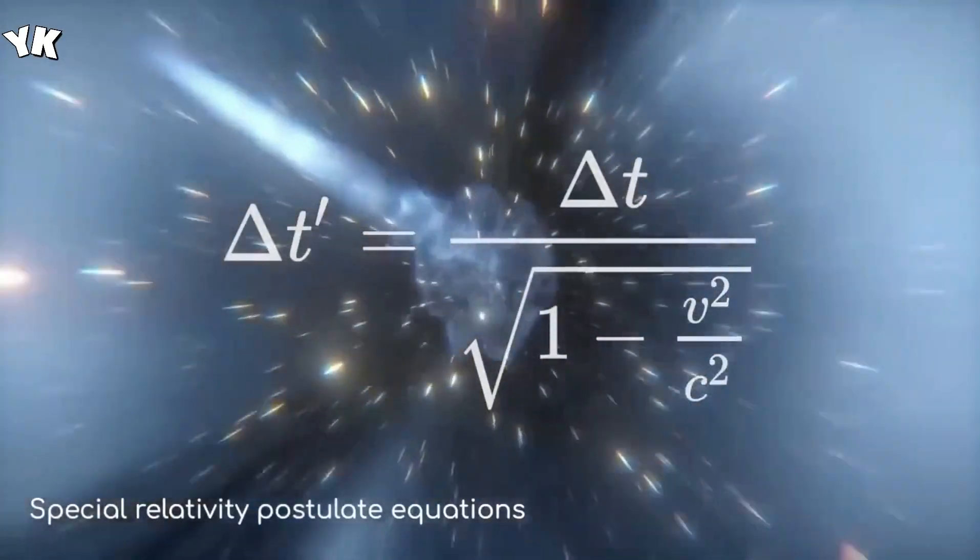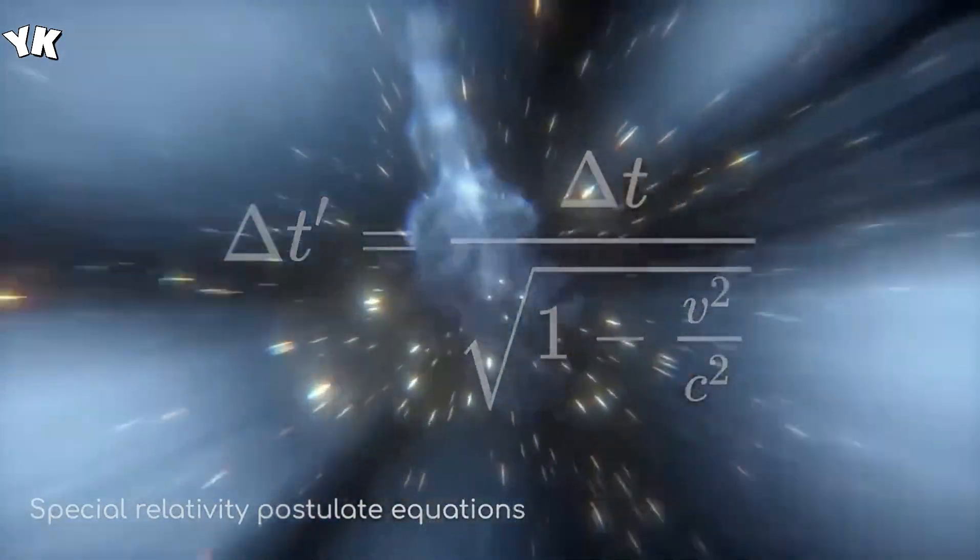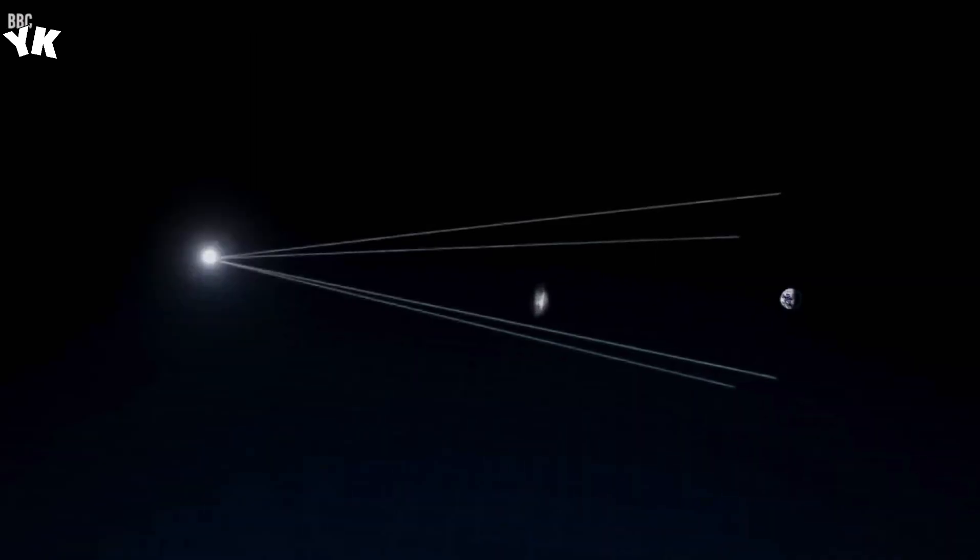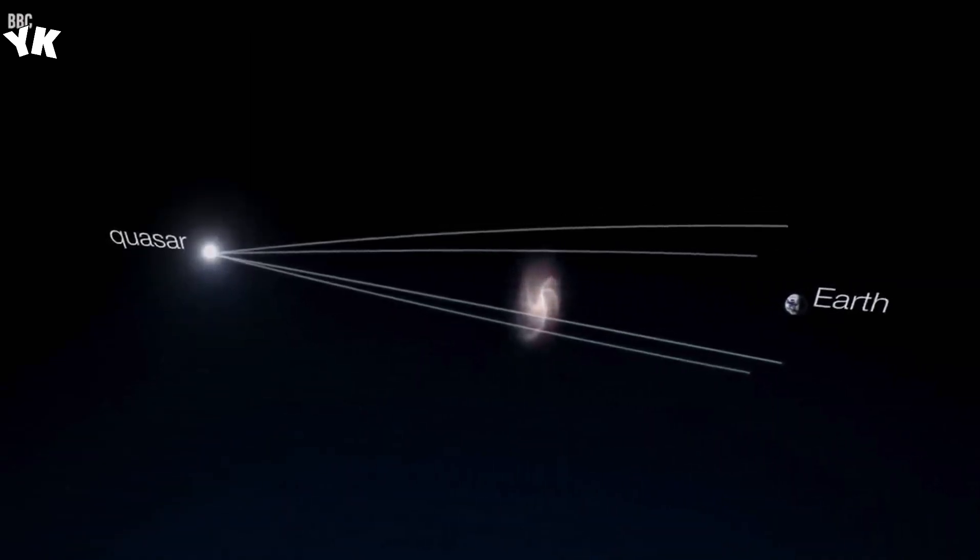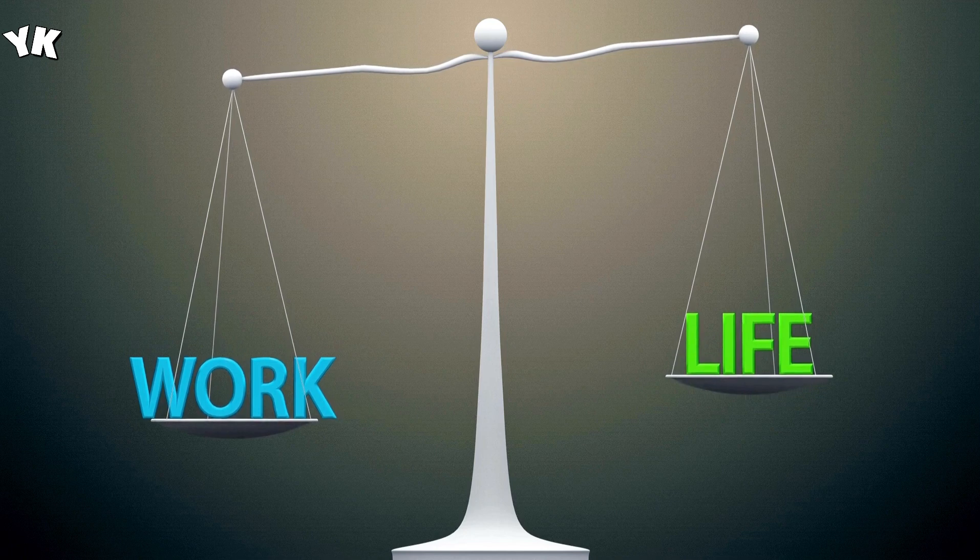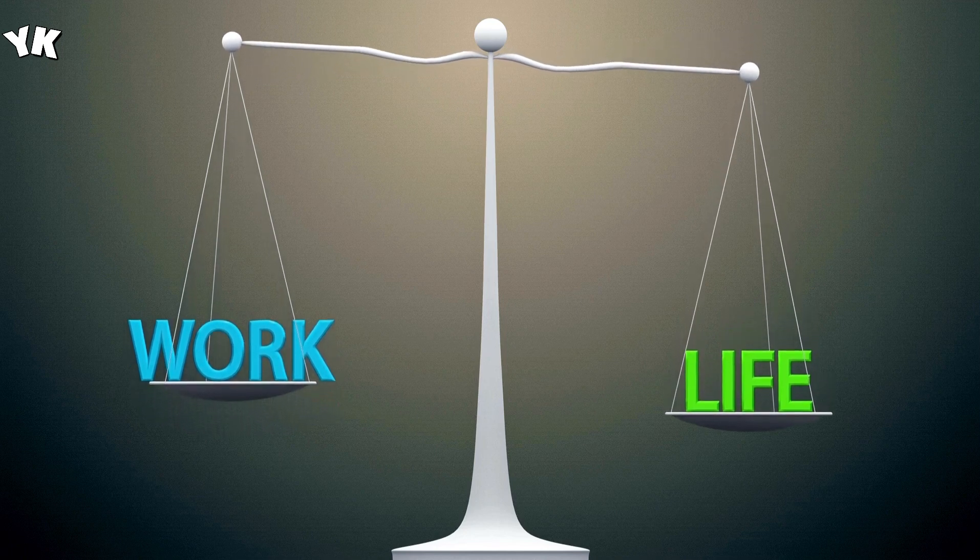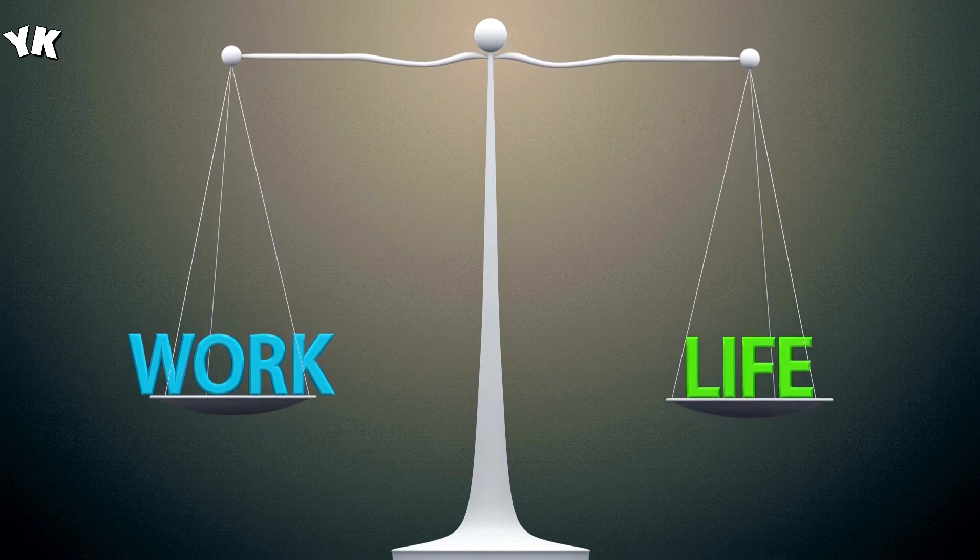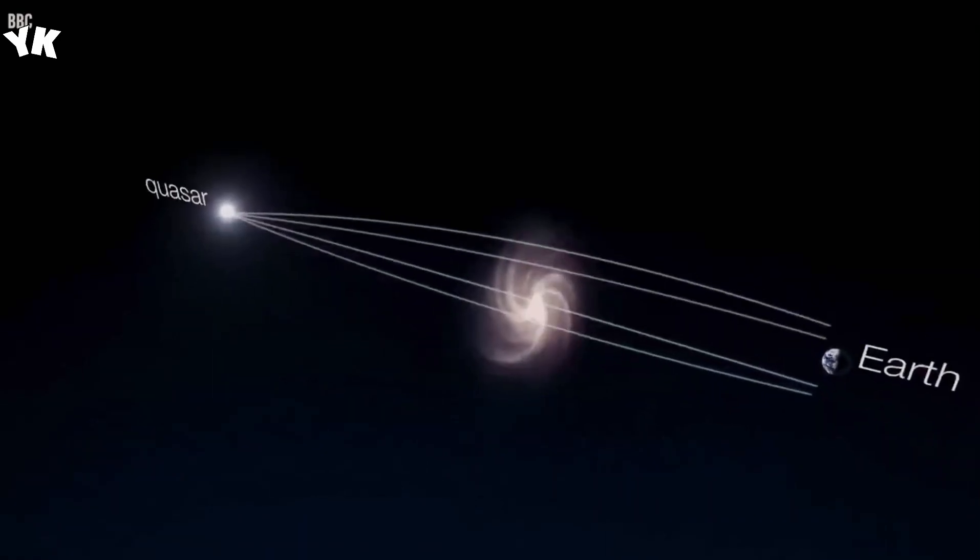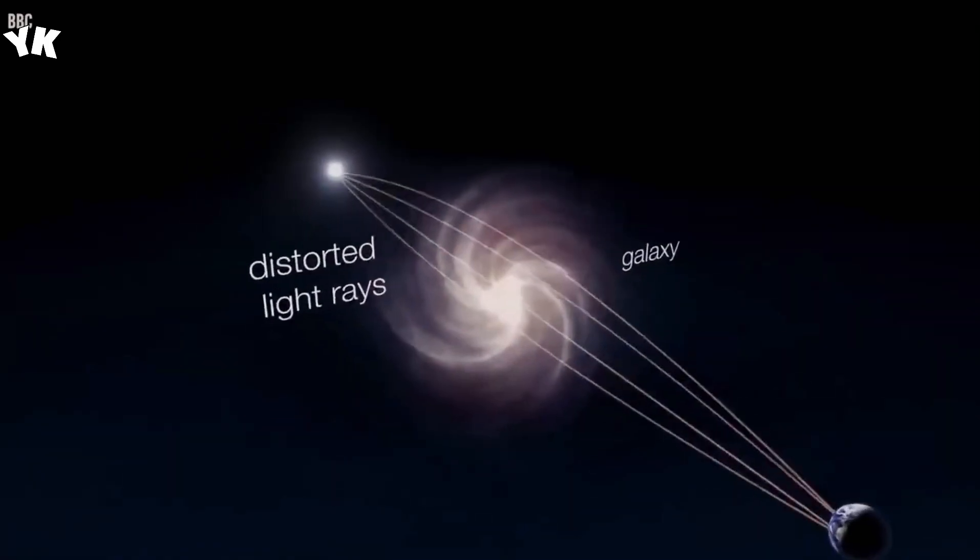Just like motion can change how we experience time according to special relativity, gravity also has an impact on time. In places where gravity is really strong, time moves more slowly compared to areas with weaker gravity. So if you were standing close to a huge object like a black hole, your clock would tick more slowly than one placed far away from this powerful mass. General relativity introduces the idea of black holes, which are spots where gravity is super intense. Inside a black hole, the gravitational force is so powerful that nothing, not even light, can escape from it. The edge around a black hole is called the event horizon, and it's like a point of no return. Once something crosses this boundary, it gets pulled into the black hole without any chance of coming back.